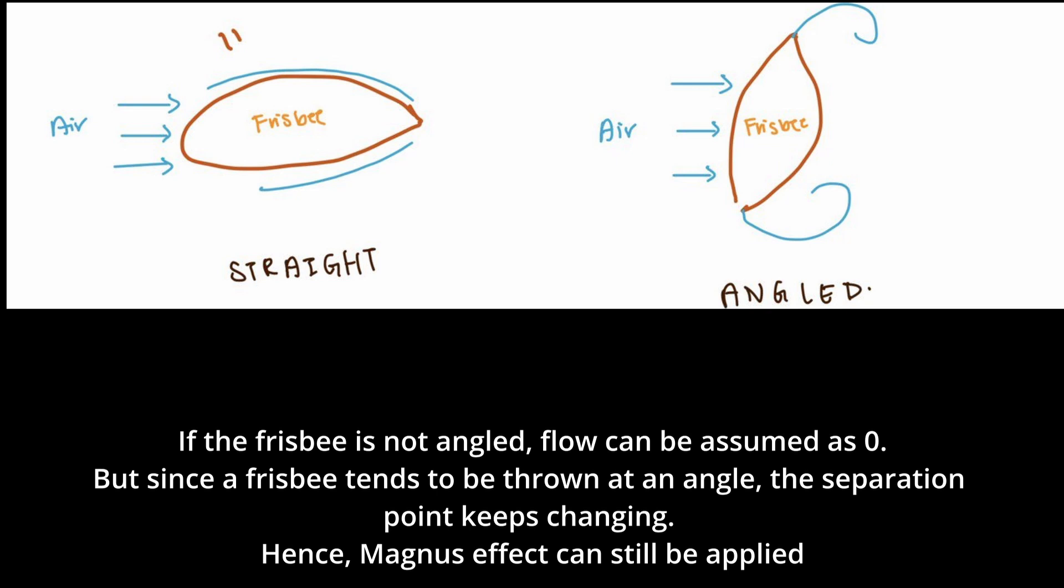If the Frisbee is not angled, flow can be assumed as zero. But since a Frisbee tends to be thrown at an angle, the separation point keeps changing. Hence, Magnus effect can still be applied.